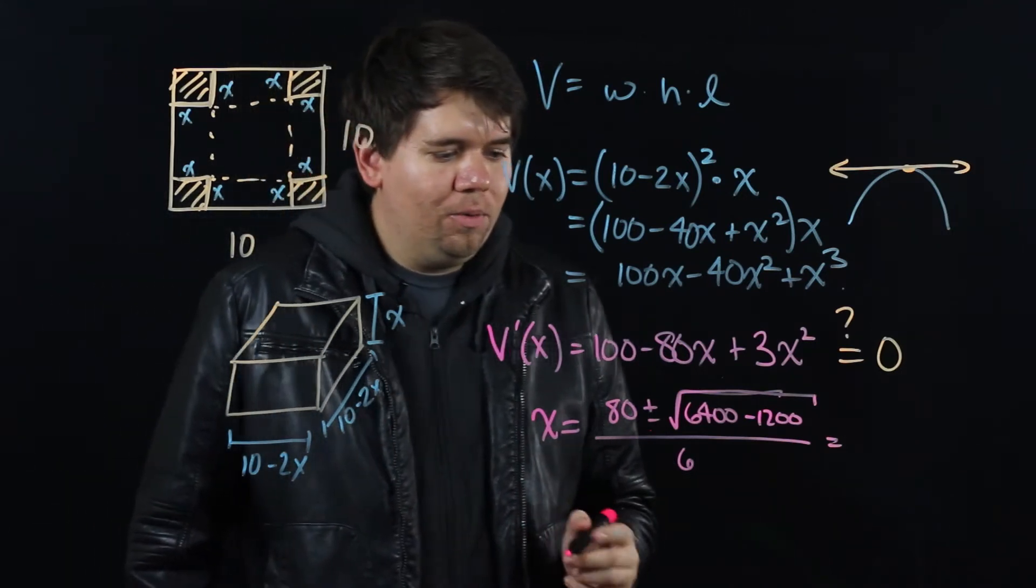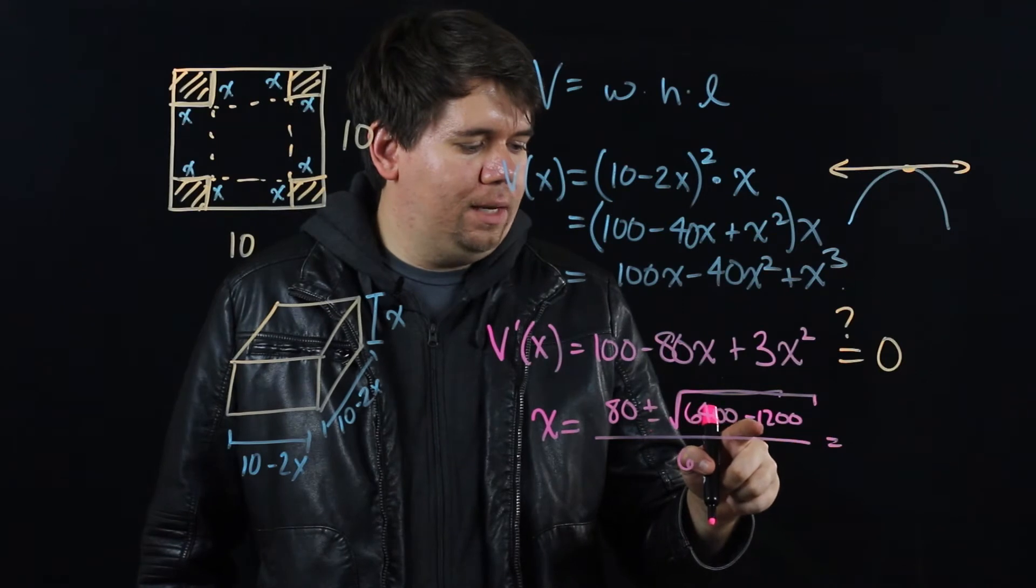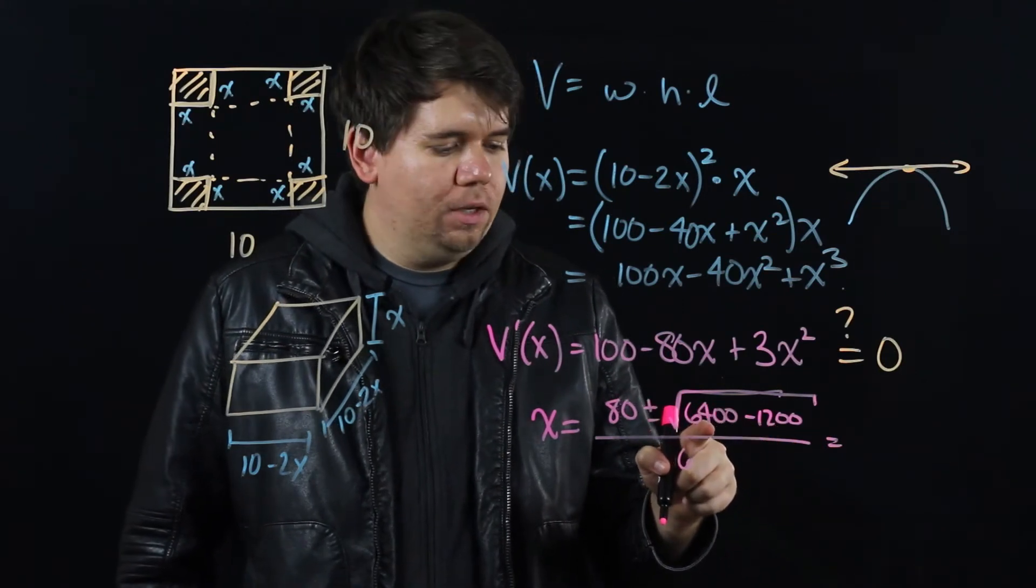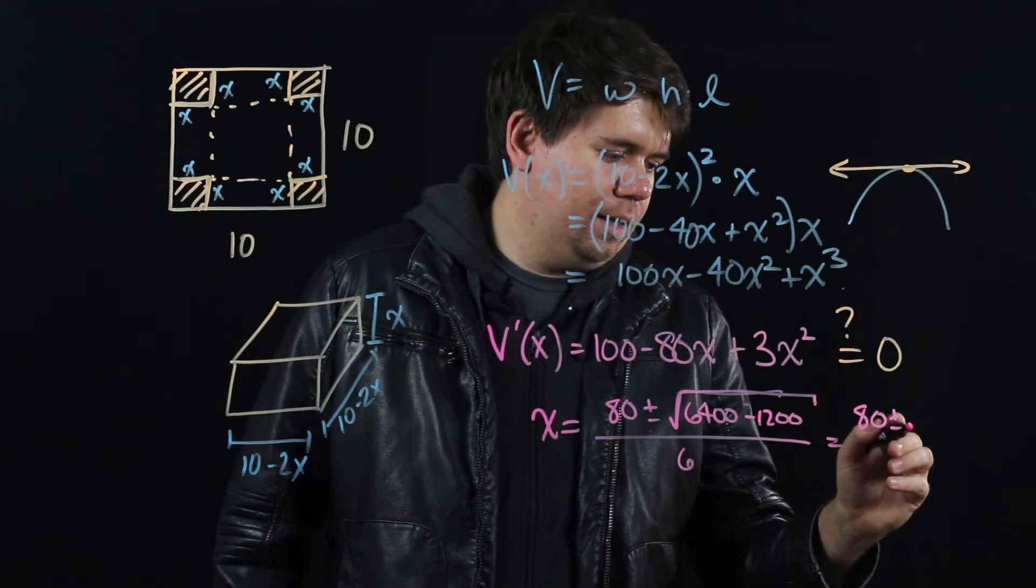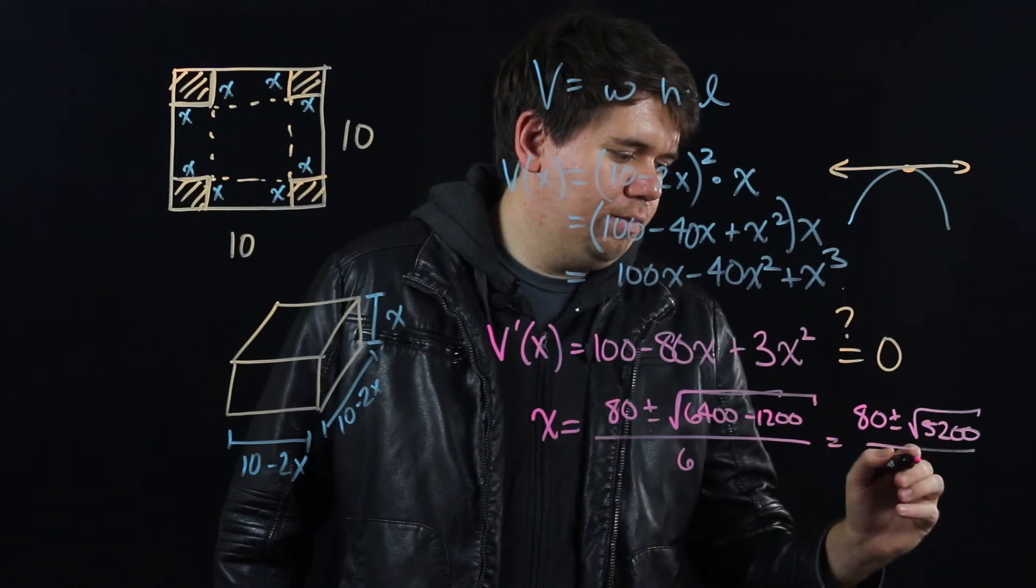What does this come out to be? Well, it's a little bit messy. 6400 minus 1200 is 5200. Well, you can simplify that a little bit. Plus or minus the square root of 5200 all over 6.